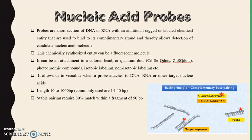Hello, my dear students. In my previous video we talked about nucleic acid probes, different types of nucleic acid probes depending on their preparation, depending on the type — whether DNA or RNA — depending on their labeling systems, either end-labeled or continuously labeled. We then started discussing the labeling of different kinds of probes, in which we talked about biotinylation.